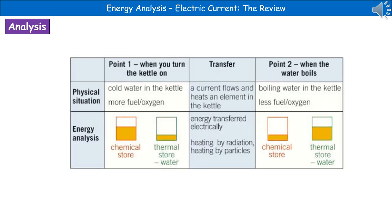We can carry out energy analysis diagrams on anything that is an electrical appliance. If we consider a kettle boiling water, the start point is when we turn the kettle on and the end point is the water boiling. Initially we have cold water and more fuel; at the end we have boiling water and less fuel. To carry out that transfer, a current flows and heats an element in the kettle.